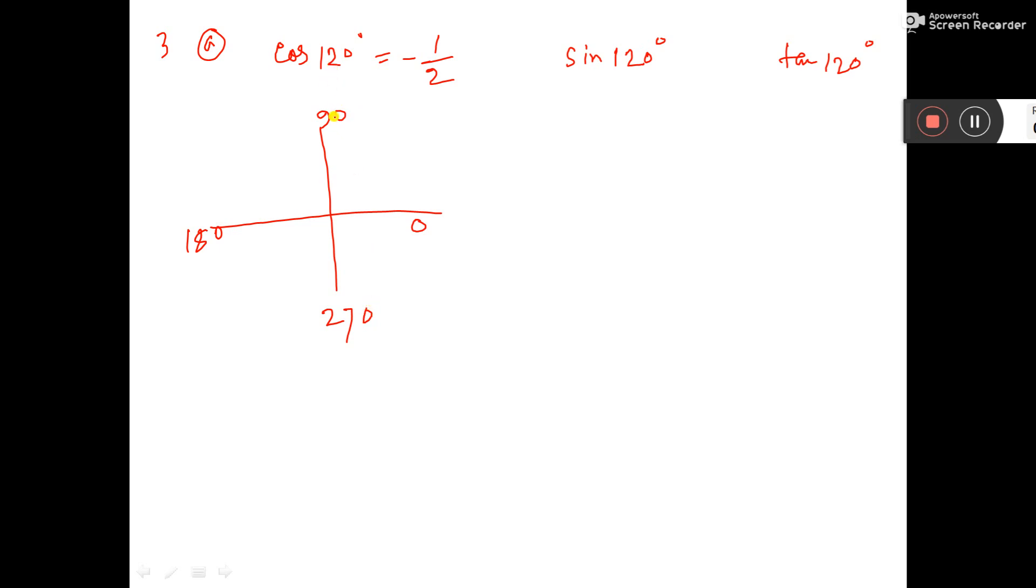120°, that is second quadrant. And we know all sign. In the second quadrant, sign is positive, but our sum is cos. So it should be negative. That is why negative value is given.